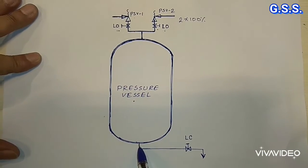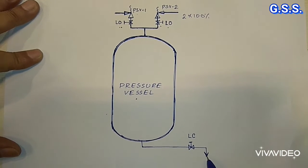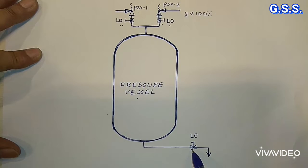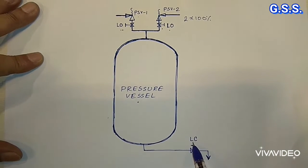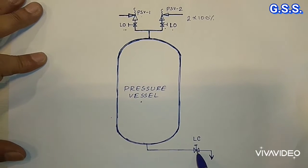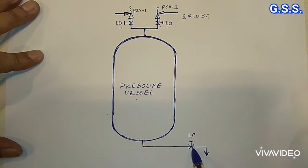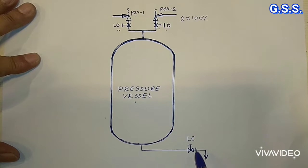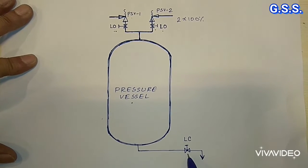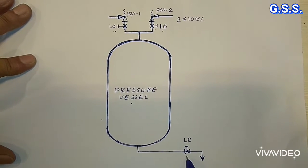Suppose this is one drain line of the pressure vessel. The drain valve should have a locking device and this valve should always be kept in the closed condition — that means locked closed — so that nobody will be able to open the valve by mistake.